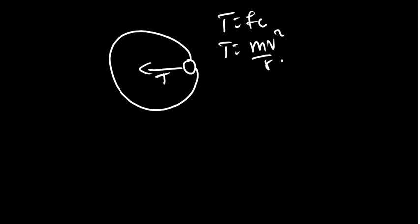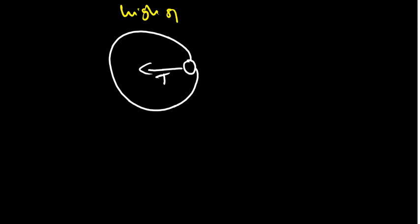There are two scenarios. When you are spinning this bulb at a very high speed, the tension force is going to be in a horizontal line — a straight line. So when the bulb is spinning at very high speed, the tension force is equal to the centripetal force, and we use the formula mv squared over r.